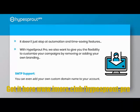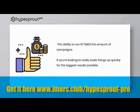Upgrading to Hype Sprout Pro is all about getting bigger and better results and saving time in the process, which is why we also give you the ability to run 10 times the amount of campaigns. That means you can have 100 active campaigns running at any time when you upgrade to Pro, for when you're looking to really scale things up quickly for the biggest results possible.